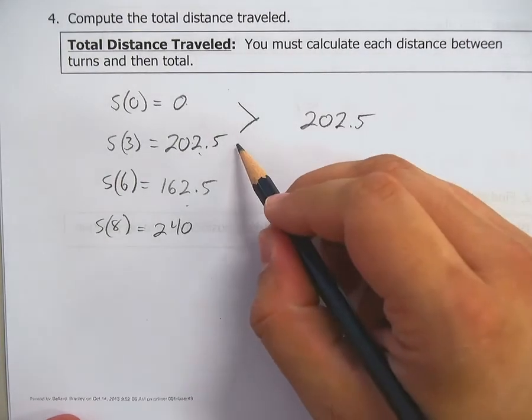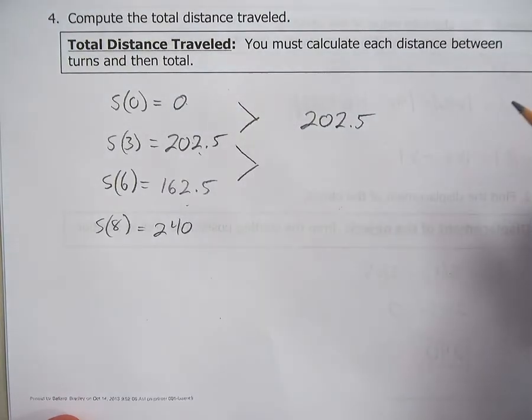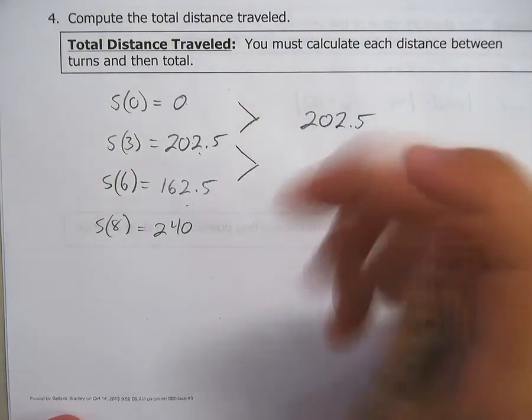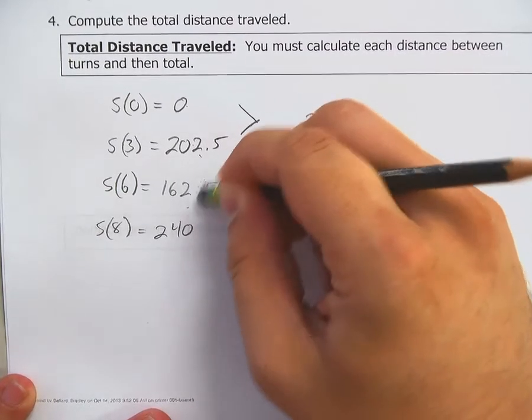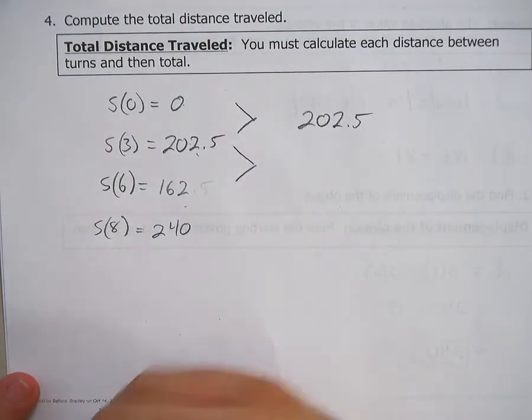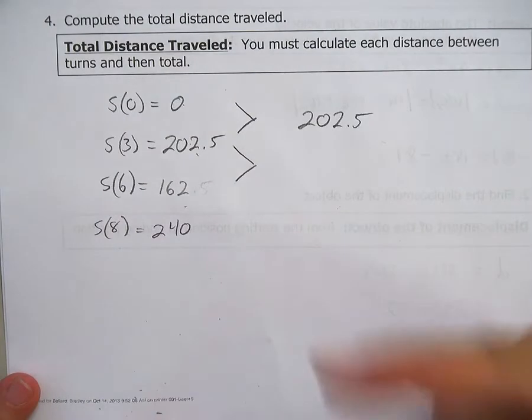To go from 202.5 to 162, even though you're going backwards, you're still traveling distance. So your odometer on your car is still going to keep ticking on.